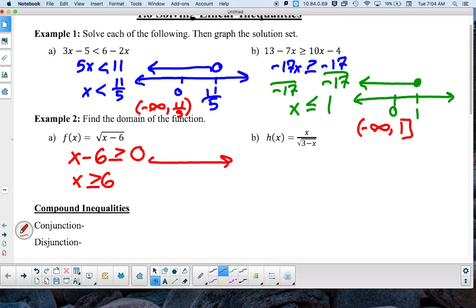So x has to be greater than or equal to 6. So if we draw our number line, this would be 6. Close that and go into the right. And so as we write our domain, it's going to have a bracket 6 to infinity.